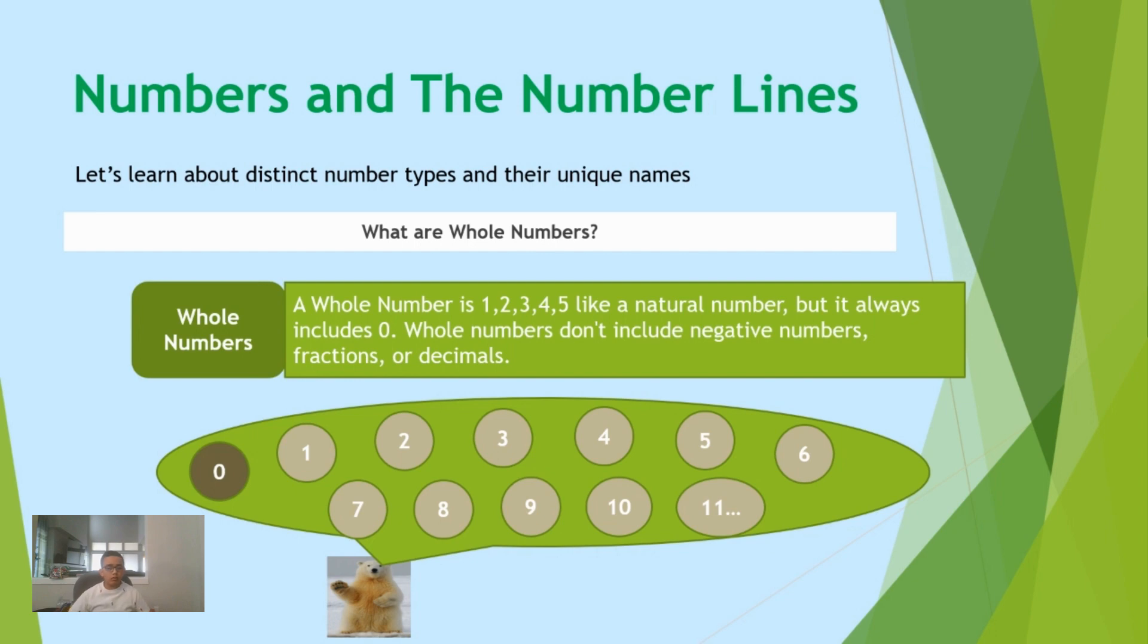Like, let's start with zero, then 1, 2, 3, 4, 5, 6, and so on. One very important thing we need to understand about whole numbers is that they don't include negative numbers, fractions, or decimals.